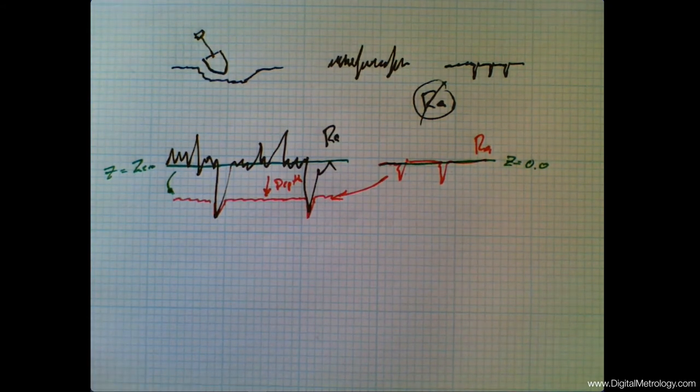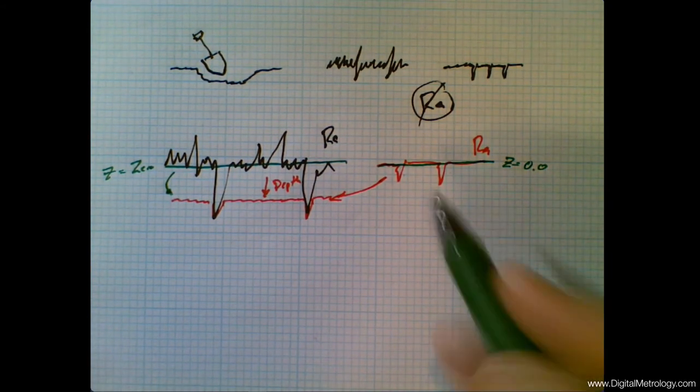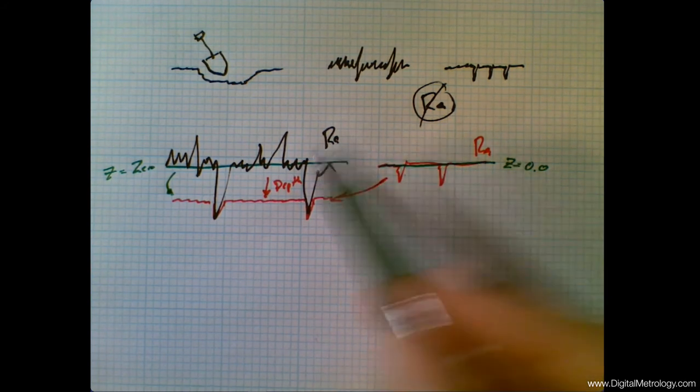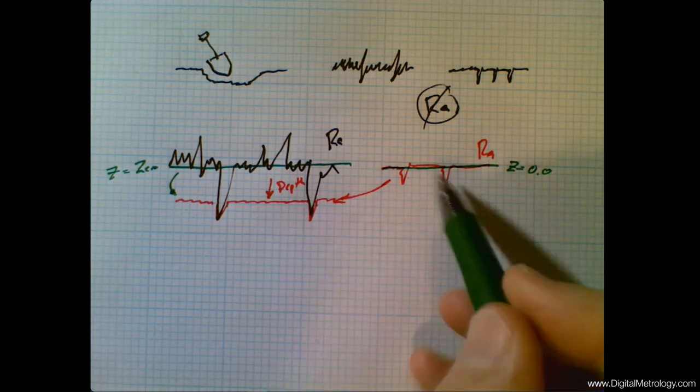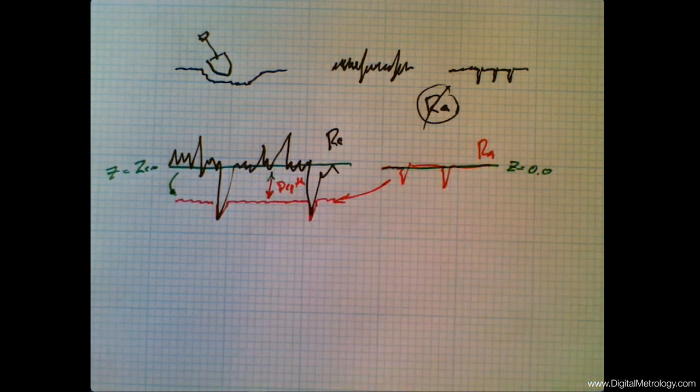So a simple roughness measurement may not tell us much about wear, simply looking at RA before and RA after, but we can do this kind of thing. We can actually plot profiles on top of each other and look at things like depths.